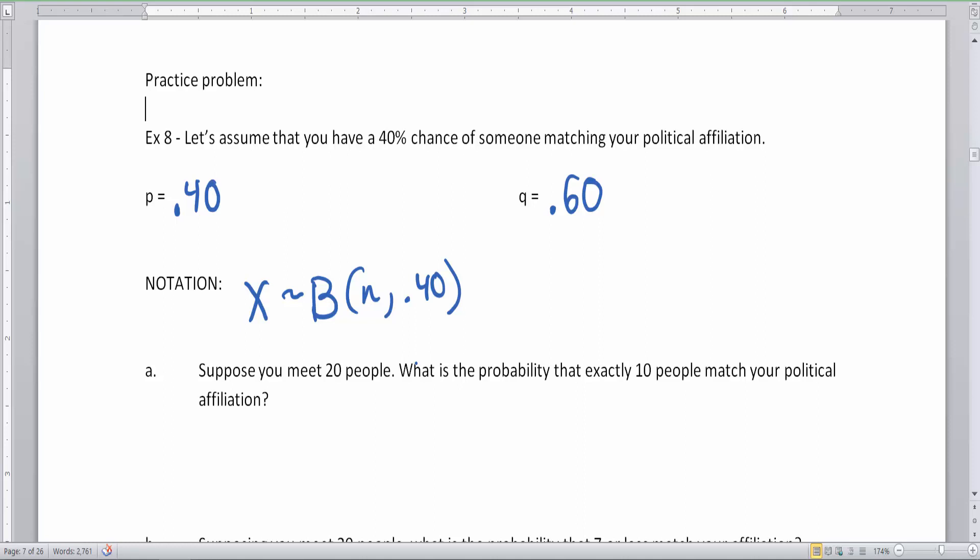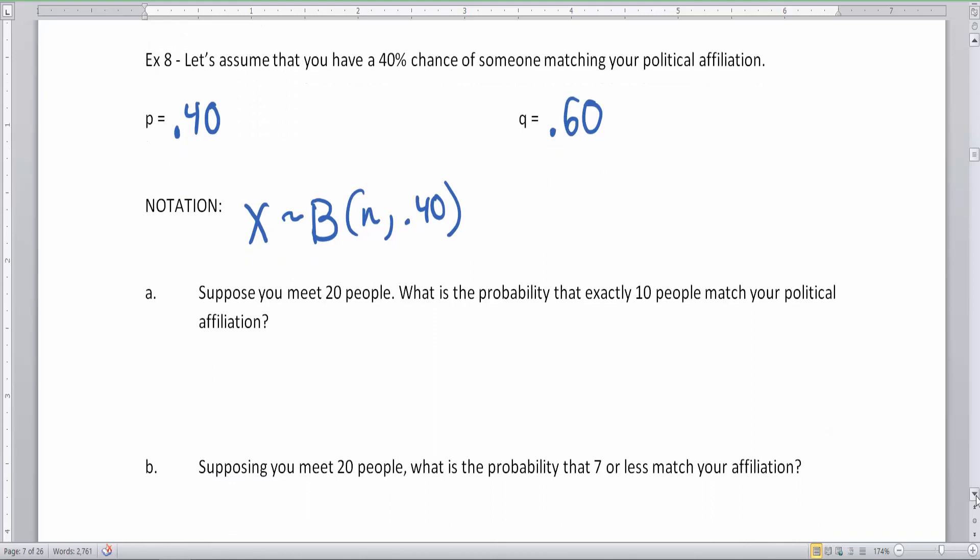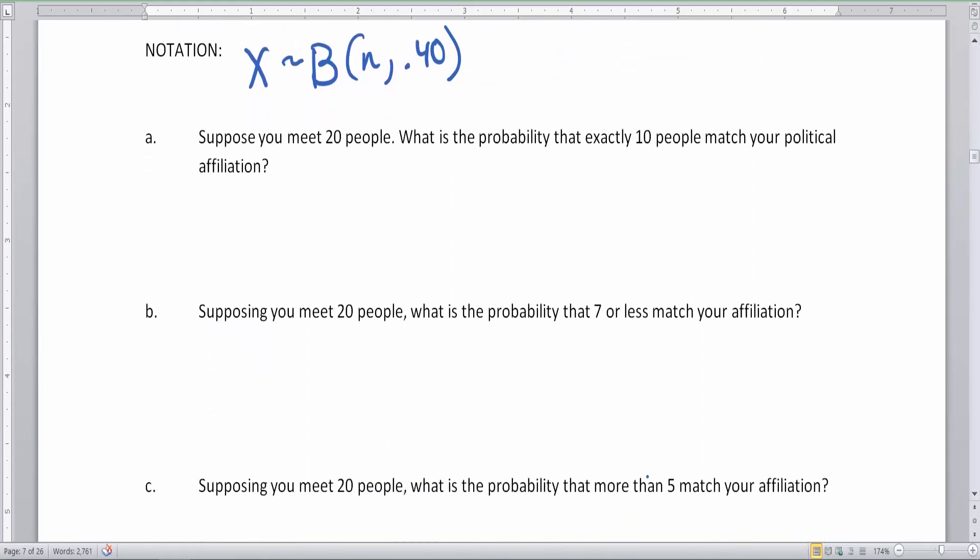Here we go. You meet 20 people, what is the probability that exactly 10 people match your political affiliation? So this is a targeted exactly 10, so n is going to be 20, this is going to be X equal to 10 right here, and that is going to set up our equation which is the probability of X equals 10 in the binomial which is our 20 person trial group and 0.40 for our success rate. According to the calculator steps I taught you in videos two and three, this would be the binomial probability distribution function which gives us 20 comma 0.40 or just 0.4 comma 10.